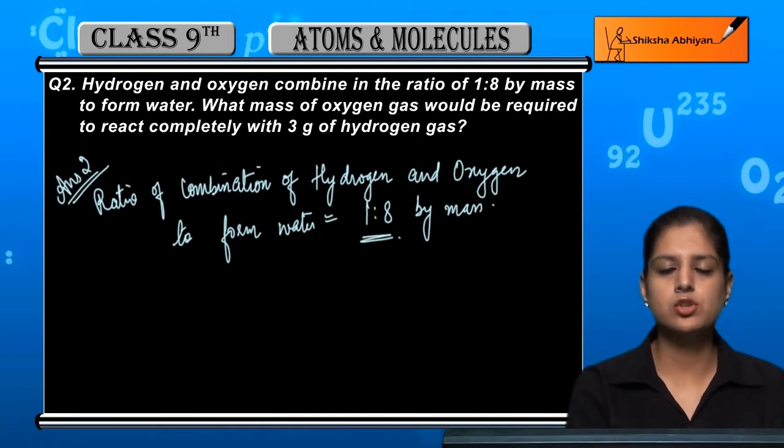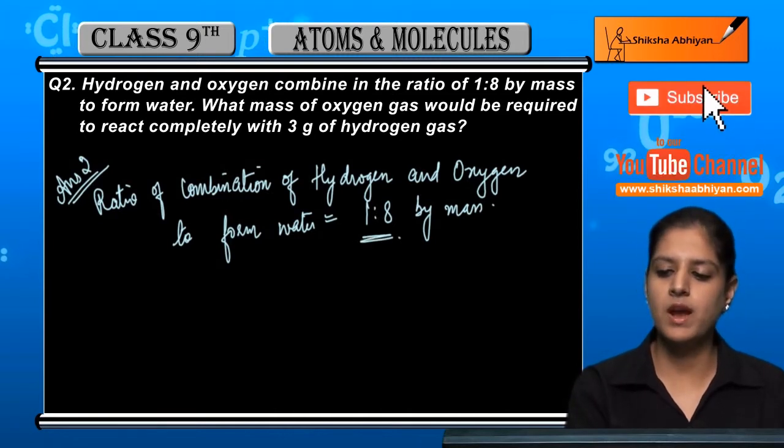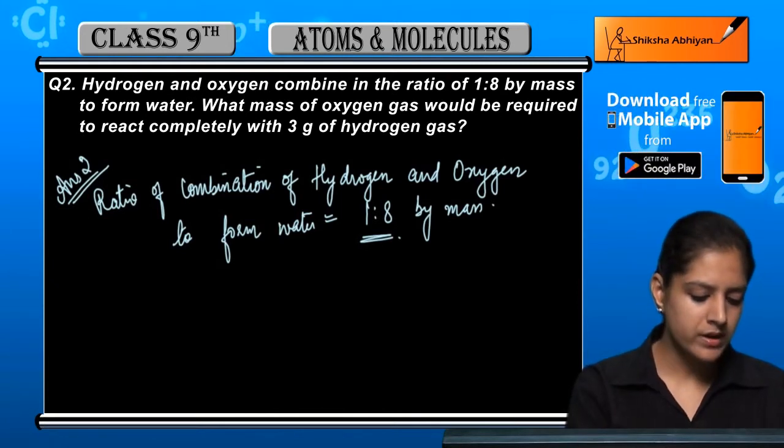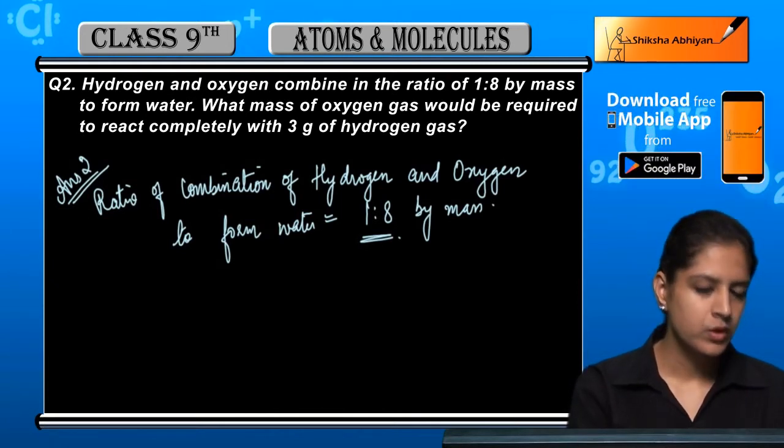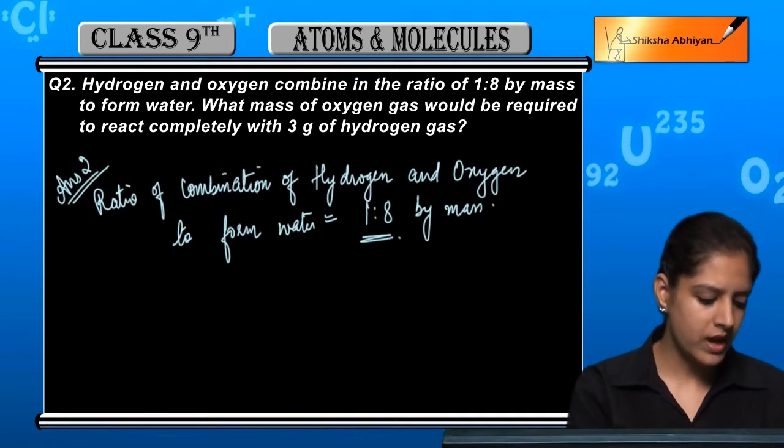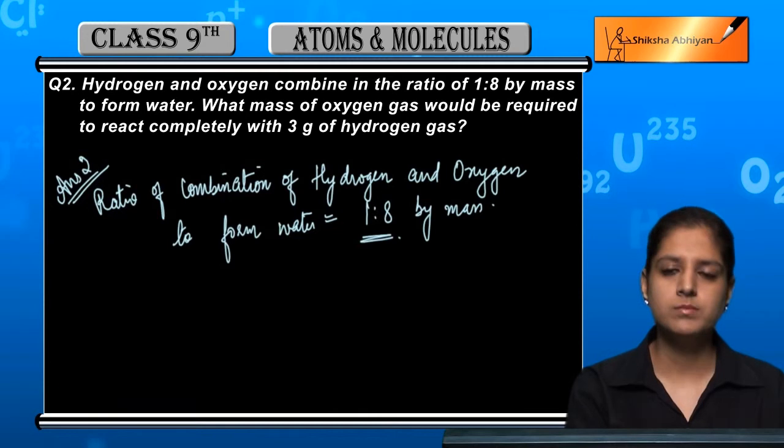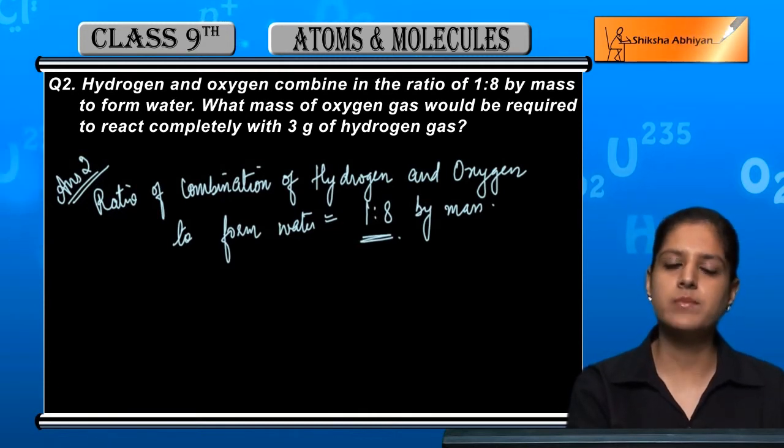In this ratio and in this proportion, we always combine hydrogen and oxygen and water forms. So what mass of oxygen gas would be required to react completely with 3 grams of hydrogen gas?